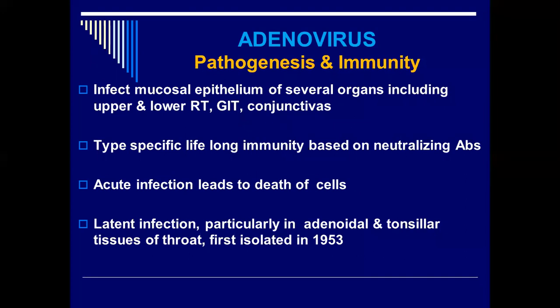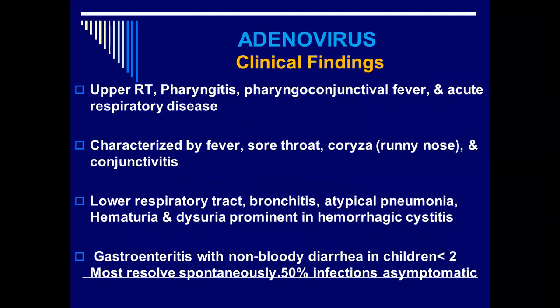That's what we call the adenovirus — because of their predilection for adenoid tissue. The clinical findings include initially respiratory tract infections like pharyngitis, pharyngoconjunctival fever, and acute respiratory disease — characterized by fever, sore throat, rhinitis (runny nose), and conjunctivitis. Lower respiratory tract involvement includes bronchitis and atypical pneumonia. It also causes hematuria and dysuria because of hemorrhagic cystitis.